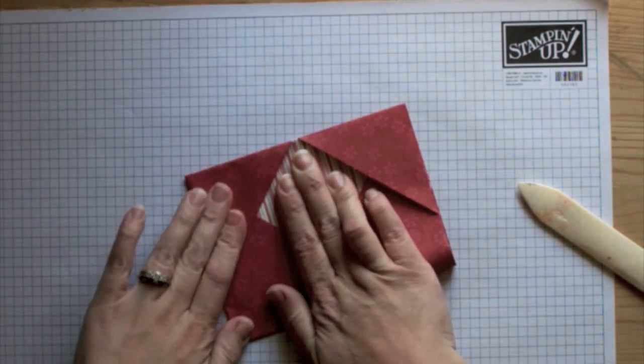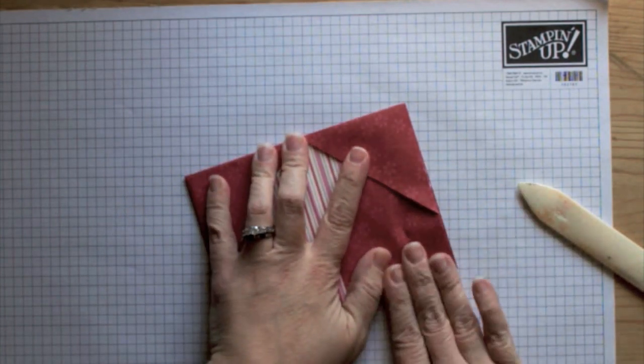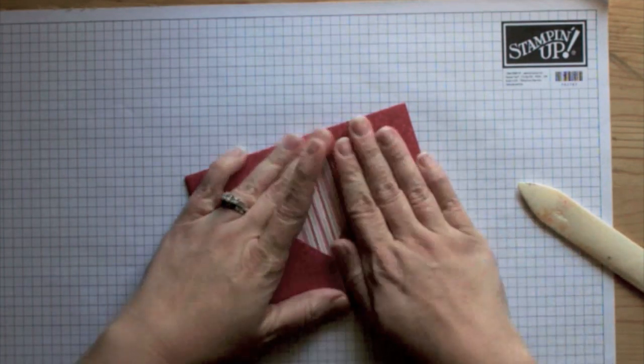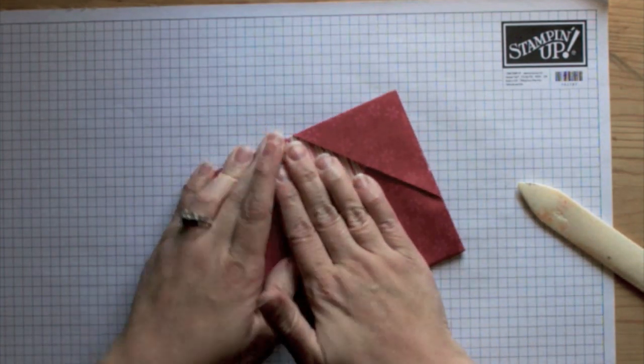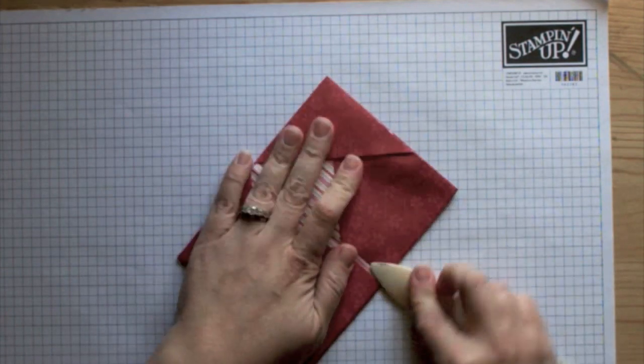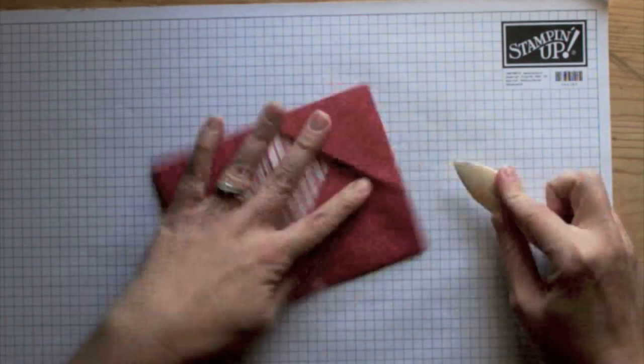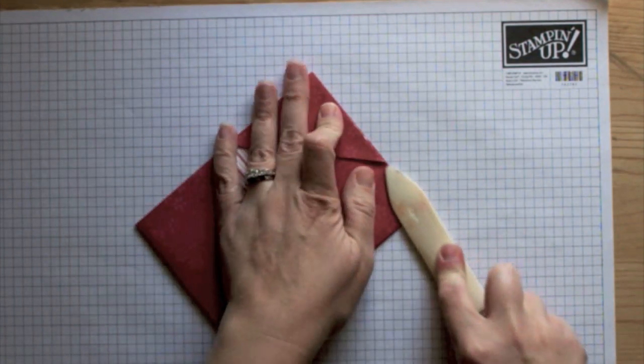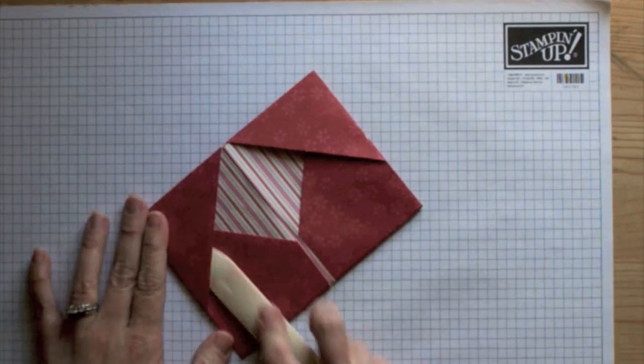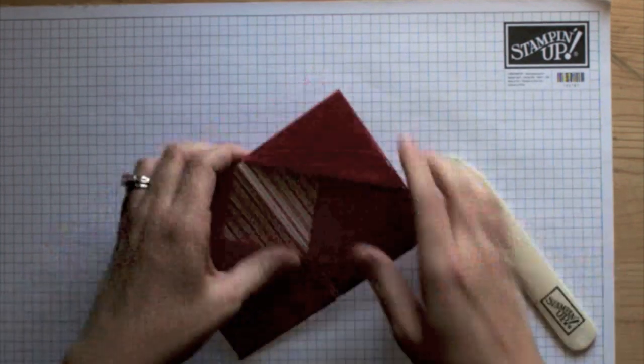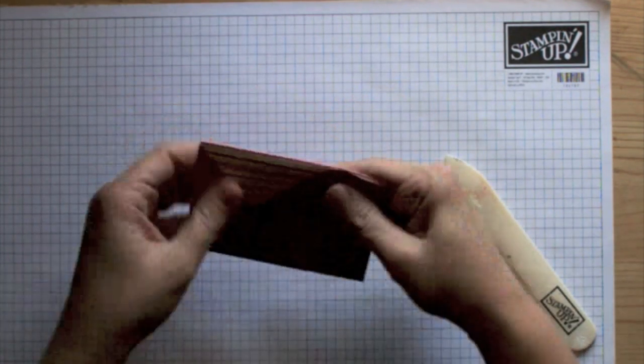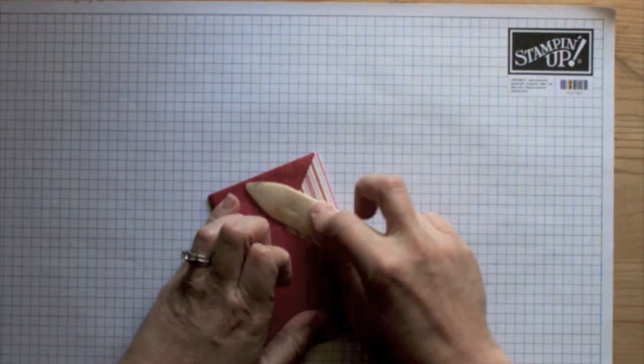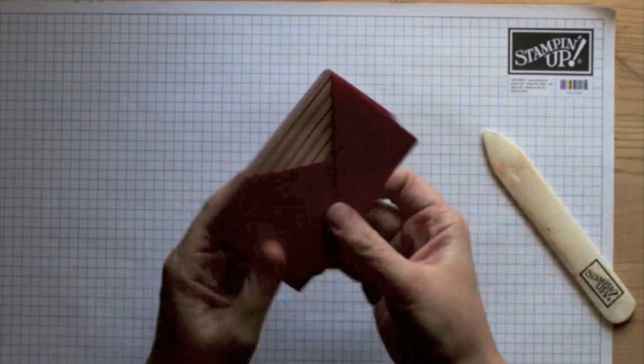And then once you've got it into the corner, then that's when you're going to want to crease. Just like that. This is where having the bone folder really comes in handy to give you all those nice, tight creases. You fold it over, and then you have your photo wallet.